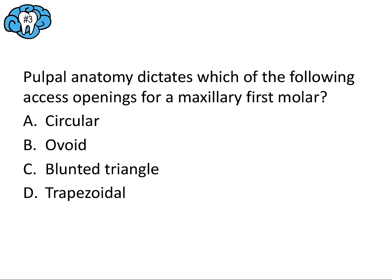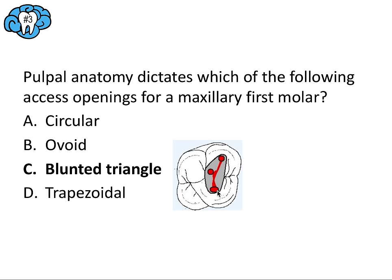Question number three: Pulpal anatomy dictates which of the following access openings for a maxillary first molar? I love questions like these — they're nice and cut-and-dry. We don't need to know the nitty-gritty details about exact access prep specifications, just the shape. A maxillary first molar commonly has three canals, and the ideal access is a blunted triangle or rhomboidal shape, providing straight-line access for those three canals. The answer is C.